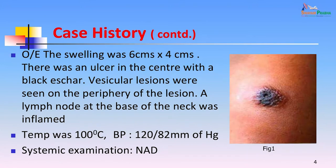On examination, the swelling was 6 centimeters by 4 centimeters. There was an ulcer in the center with a black scar. Vesicular lesions were seen on the periphery of the lesion. A lymph node at the base of the neck was inflamed. The temperature of the patient was 100 degrees Fahrenheit, pulse was 120/82, and systemic examination showed no abnormality.